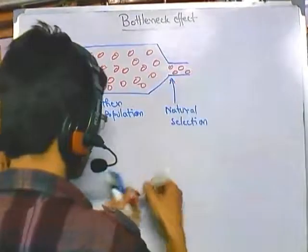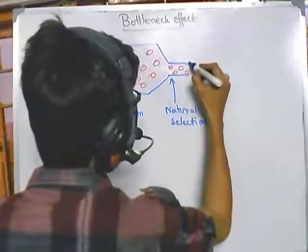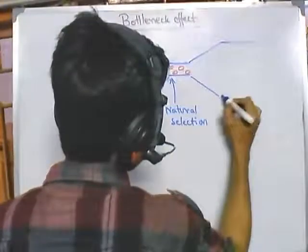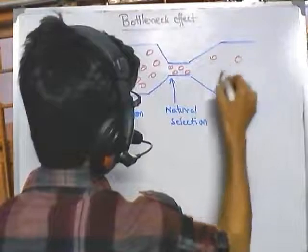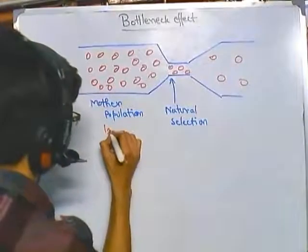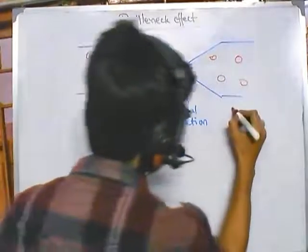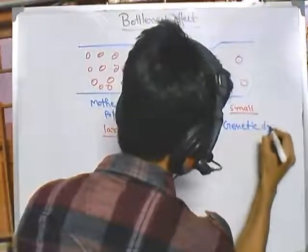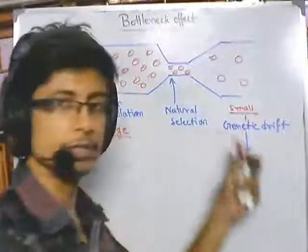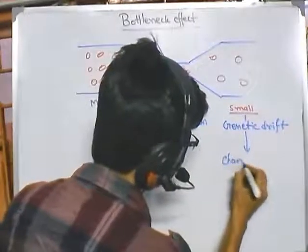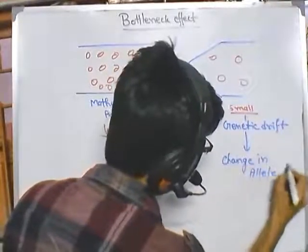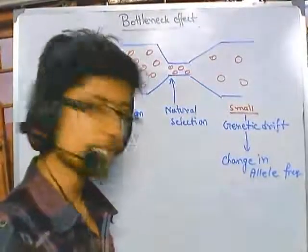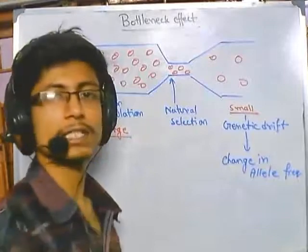After passing through the bottleneck and entering a new era, very few members of the original population remain. Previously the population was large, but now due to the bottleneck effect it is a very small population. As a result of genetic drift in this small population, there will be a change in allele frequency — and as the population becomes smaller and smaller, there is more chance of allele frequency changing.